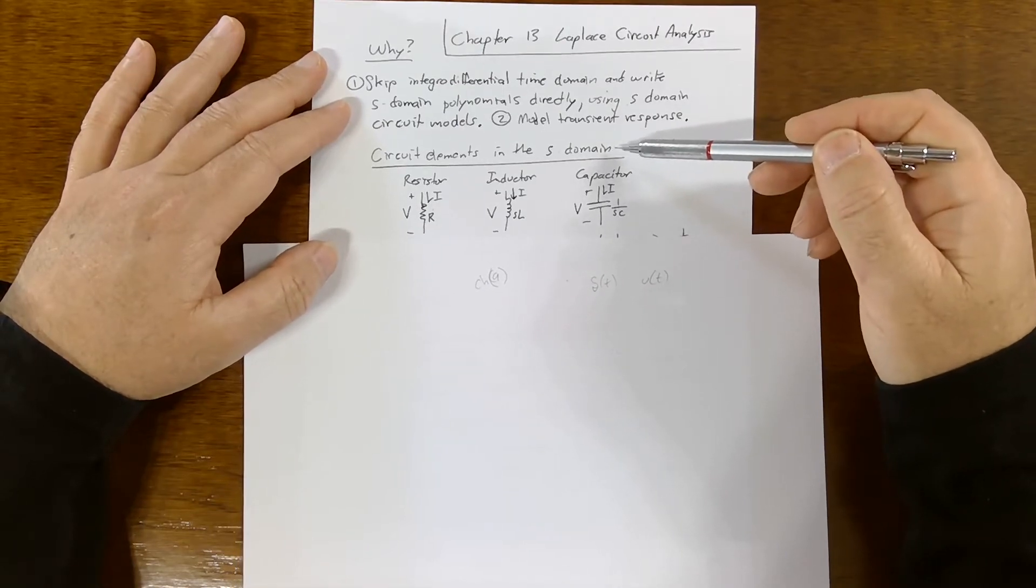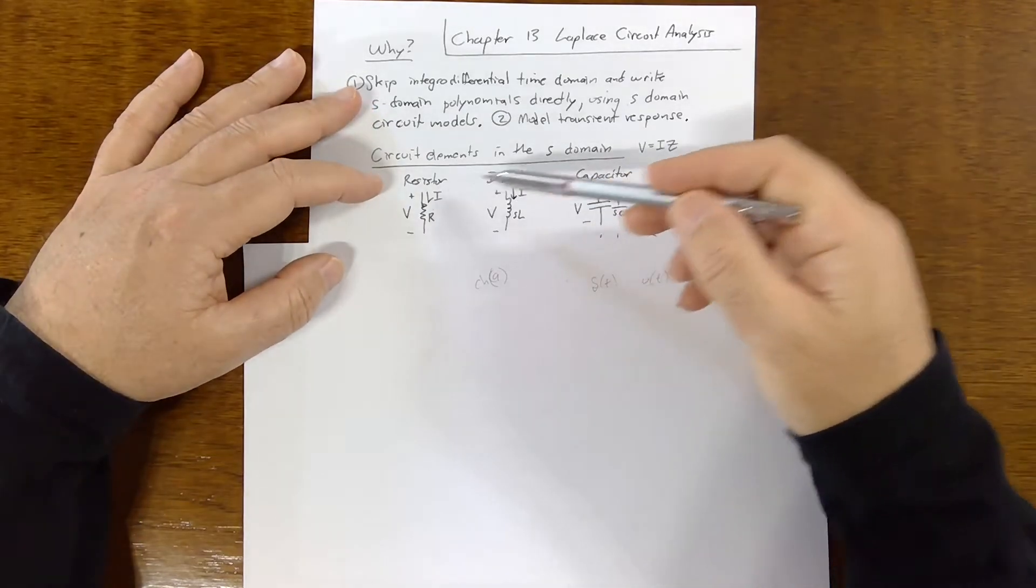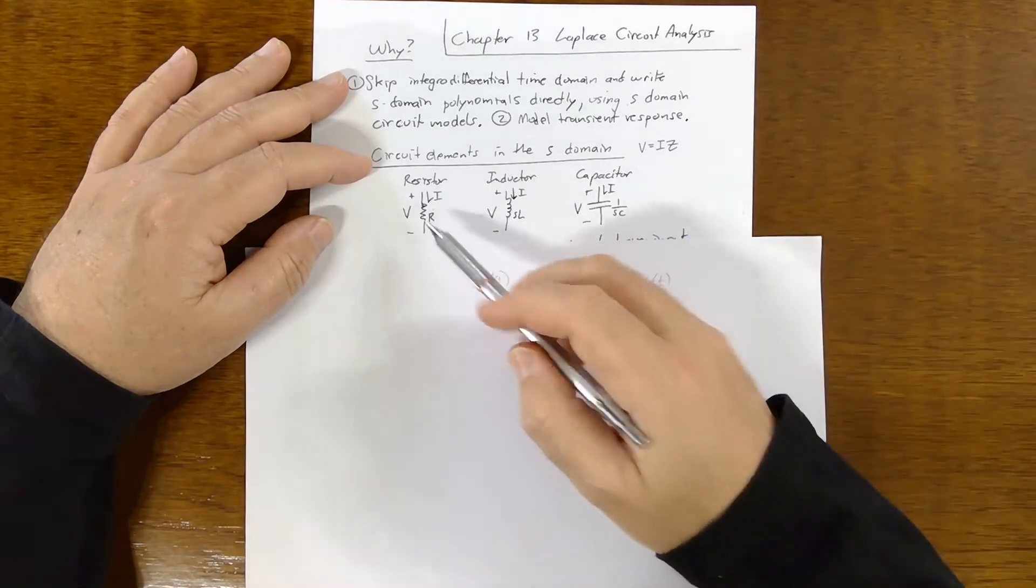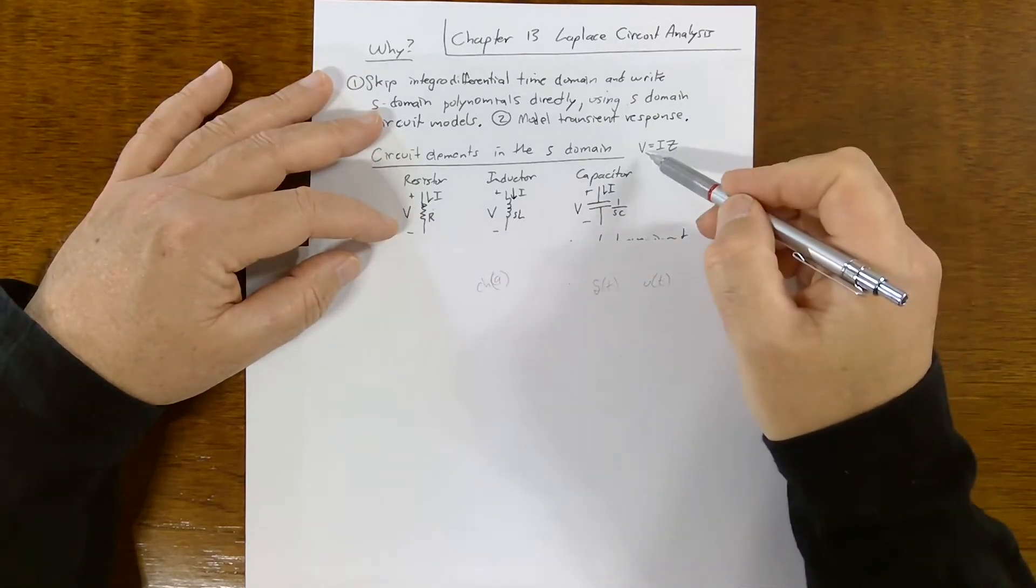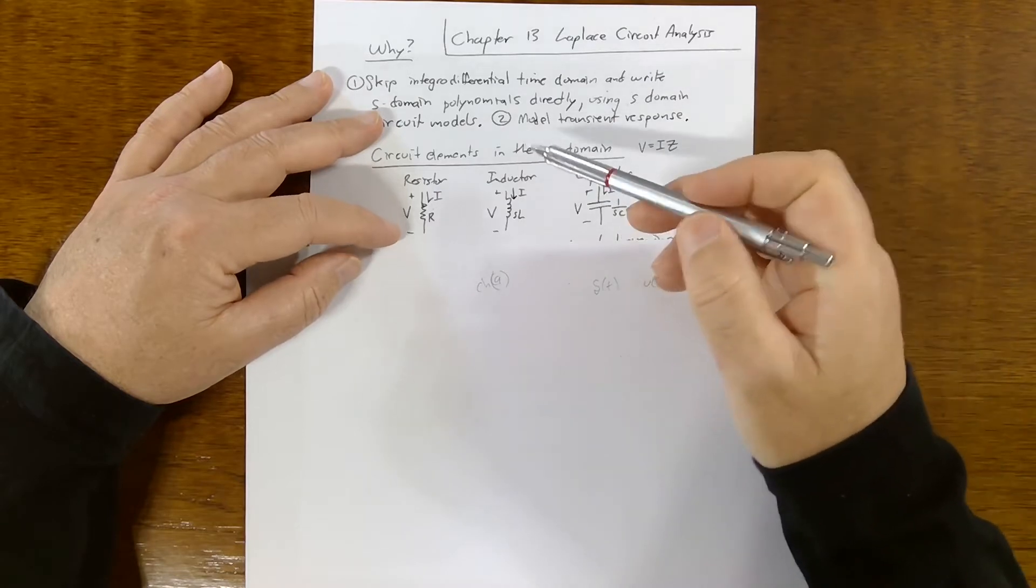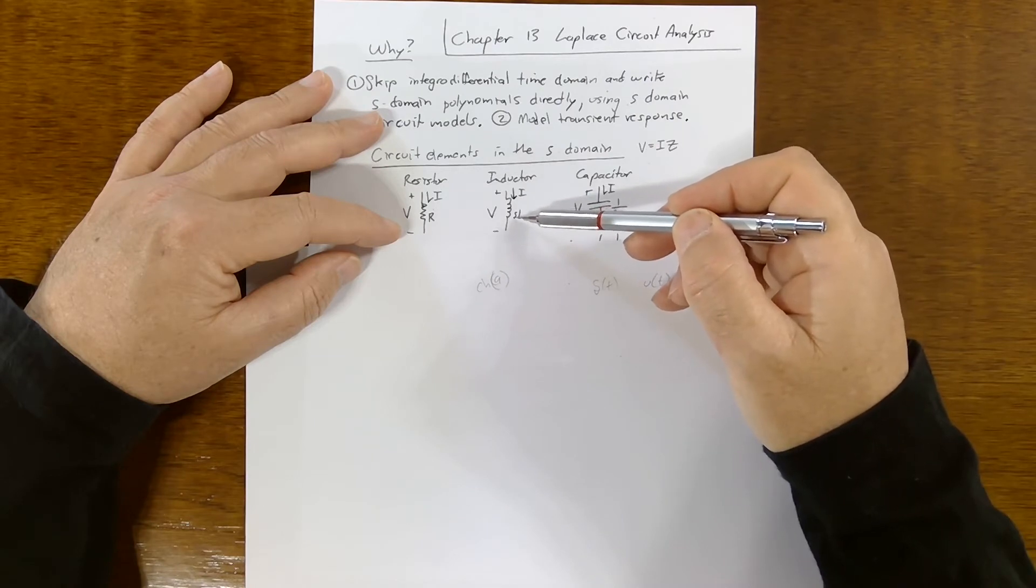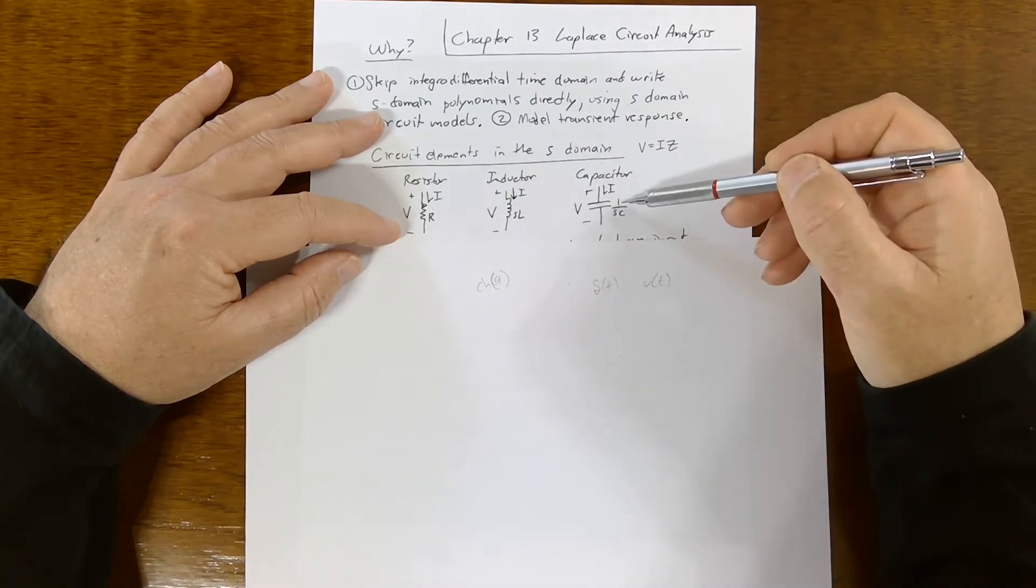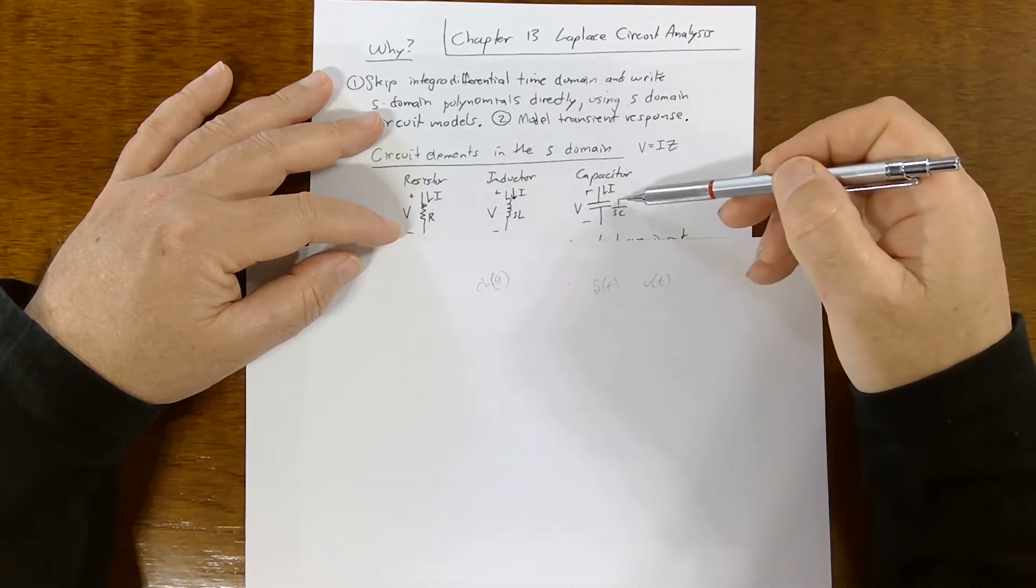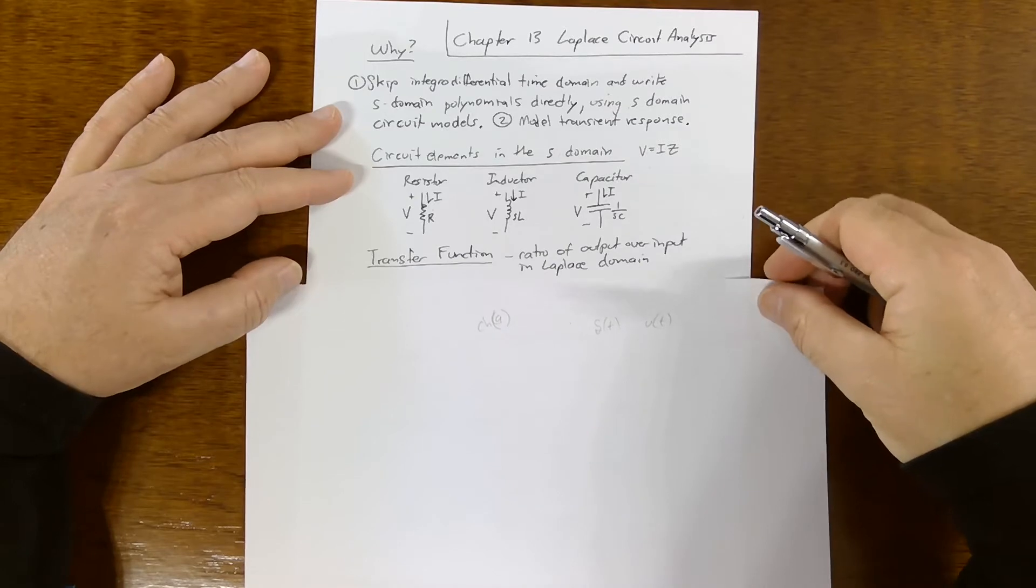So here's circuit elements in the S domain. We have Ohm's law, V equals IZ. We have our three passive elements: resistors, inductors, and capacitors. Resistance is just resistance. It doesn't change. For inductor, you'd use V equals IZ and the impedance is given by SL. For capacitor, it also has units Ohms, but it's given by one over SC. So we're skipping a lot of math on why this is the case, but we're just going to use them.